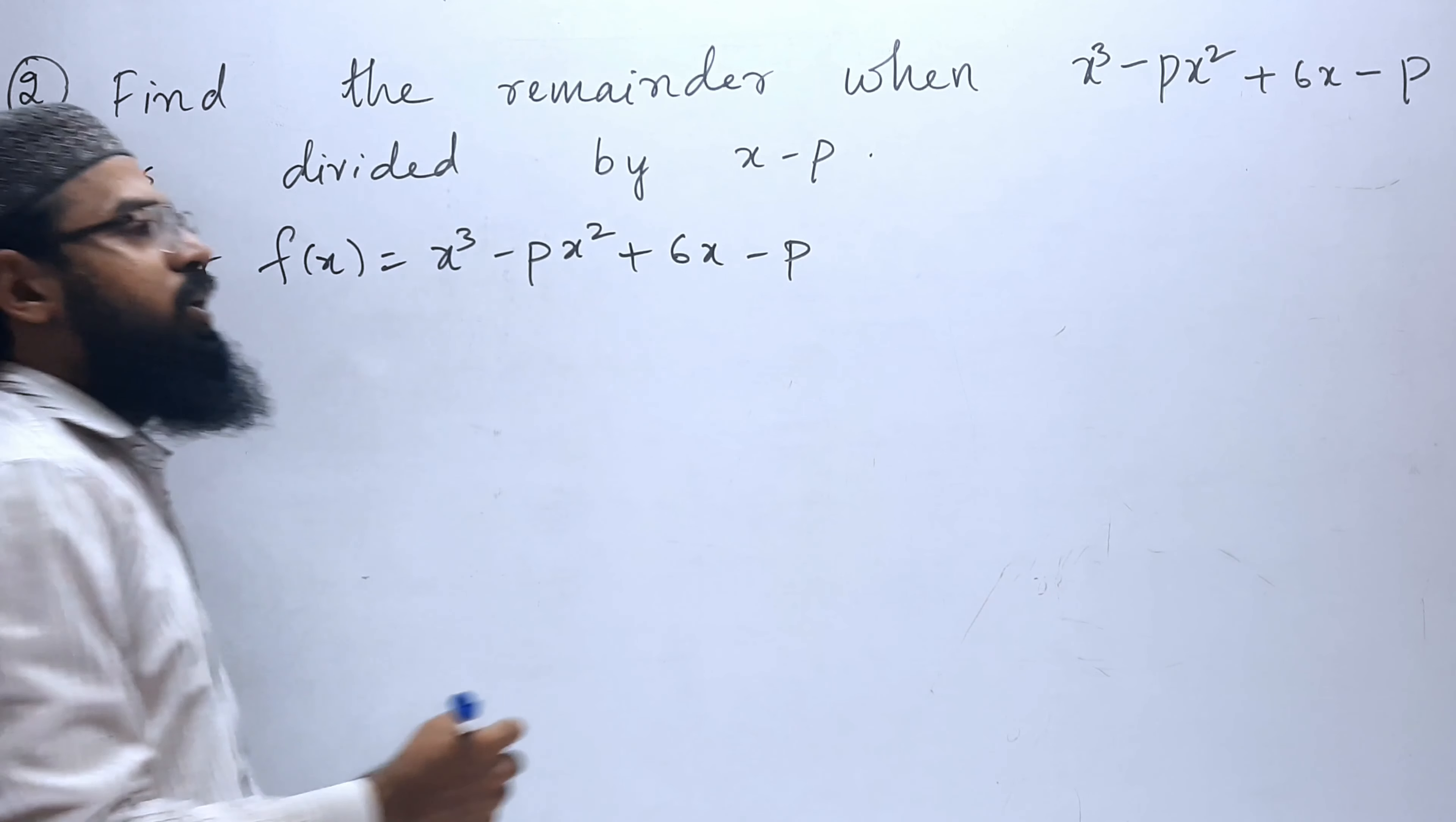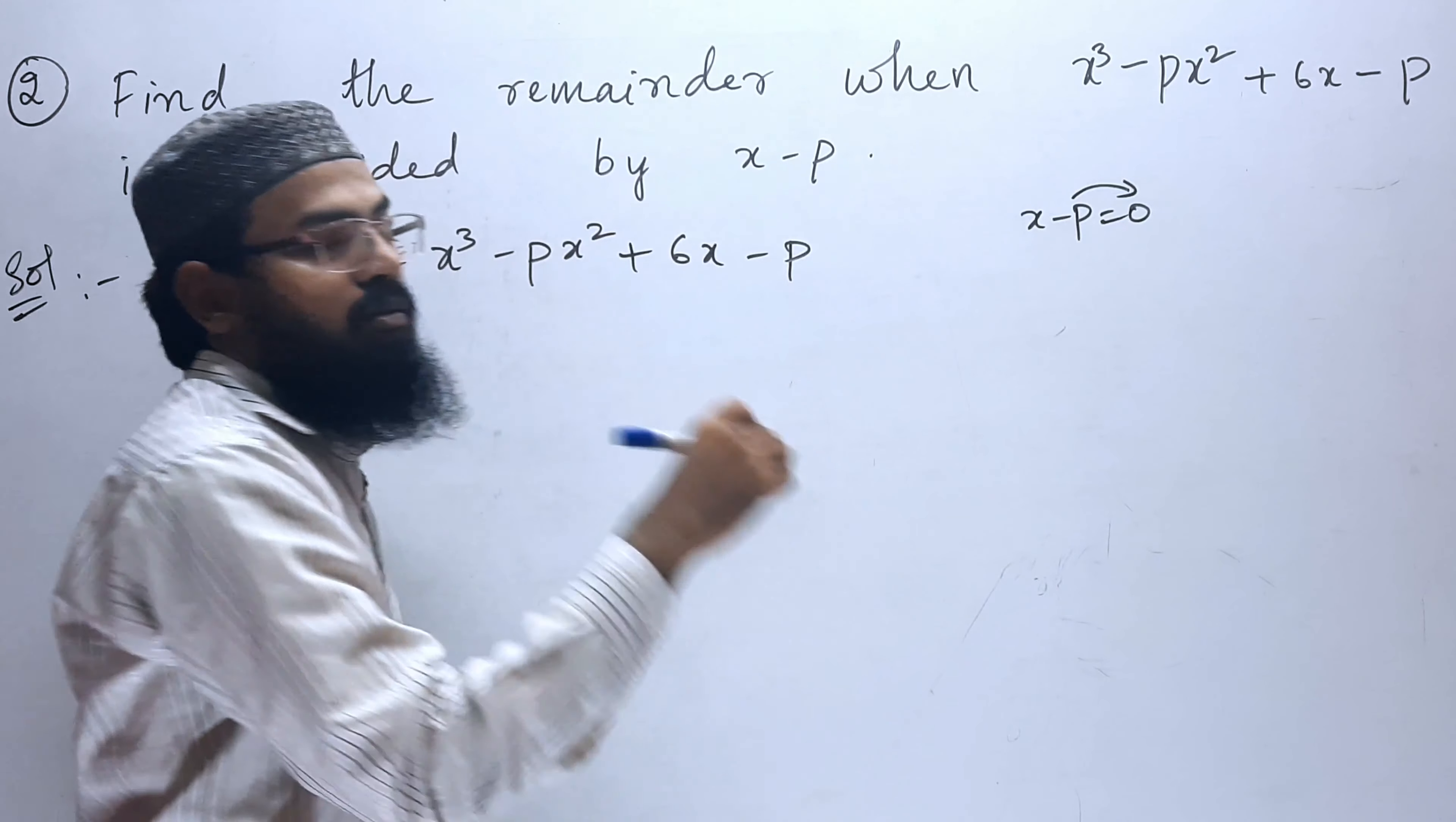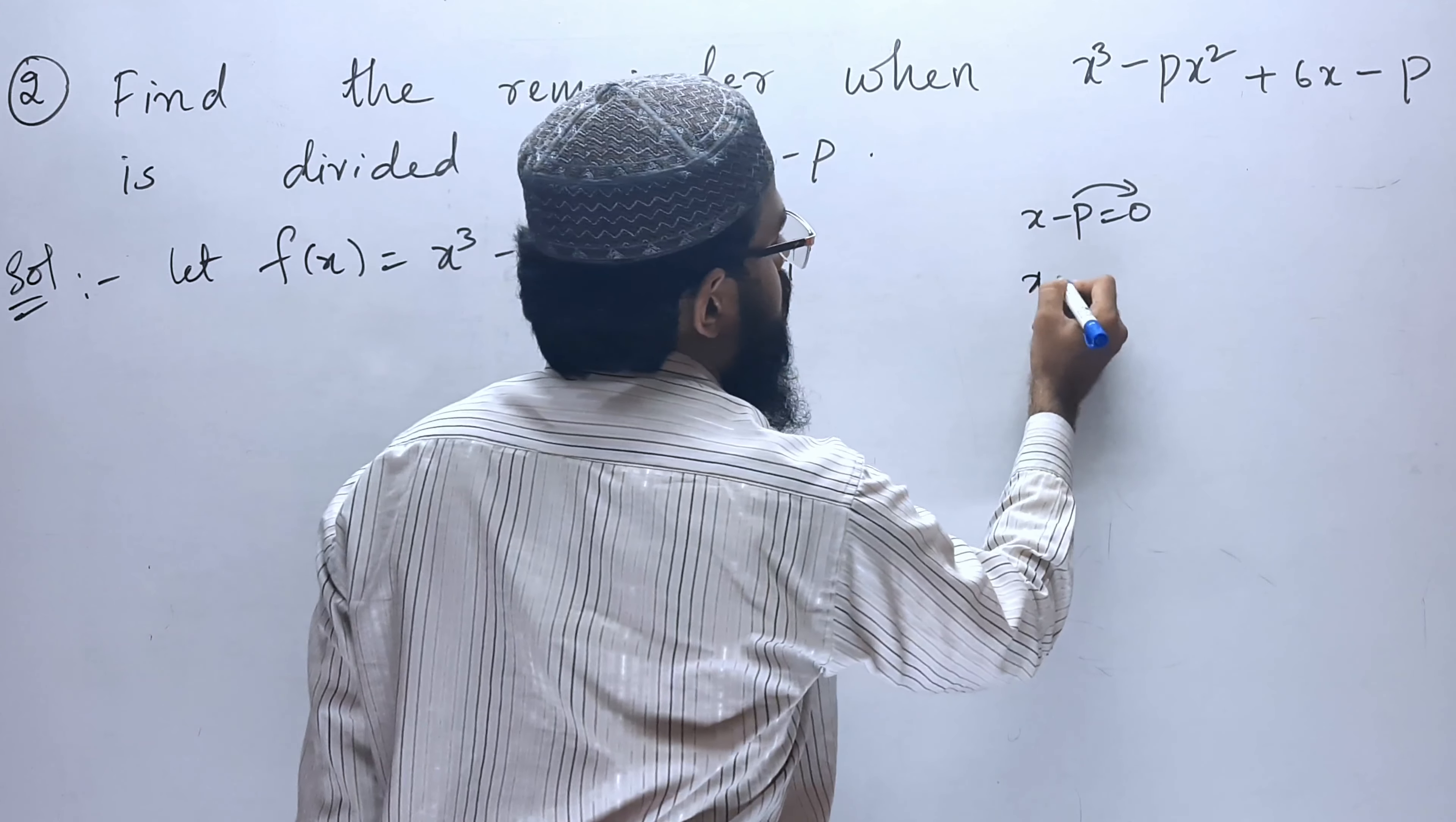Next, with what we have to divide? With x minus p. So, let x minus p equal zero. Send that minus p to that side, so it will become x equals p.